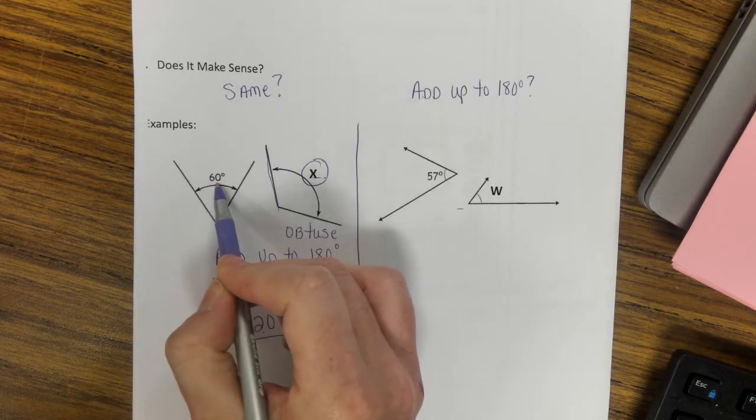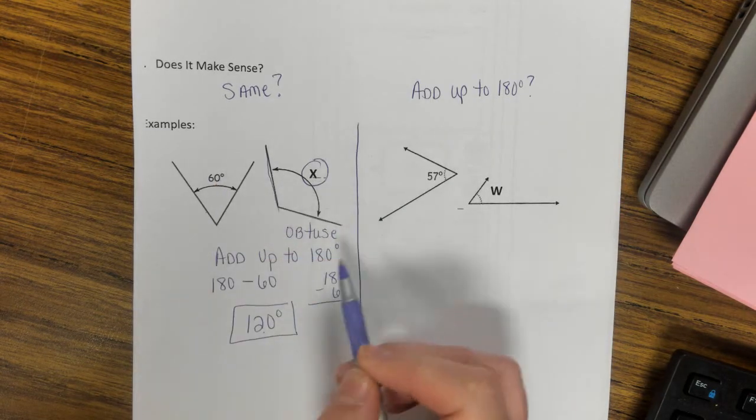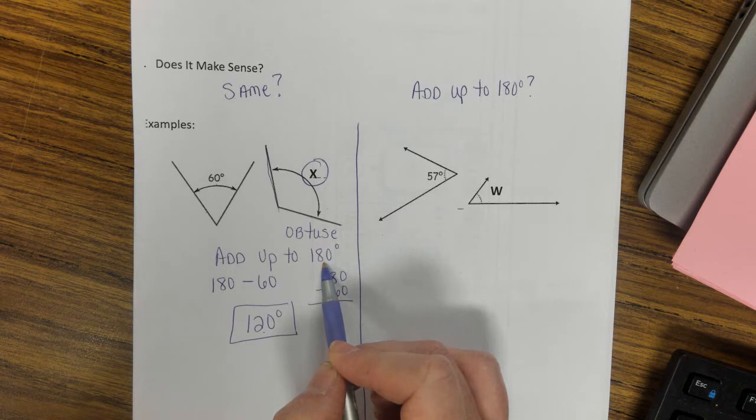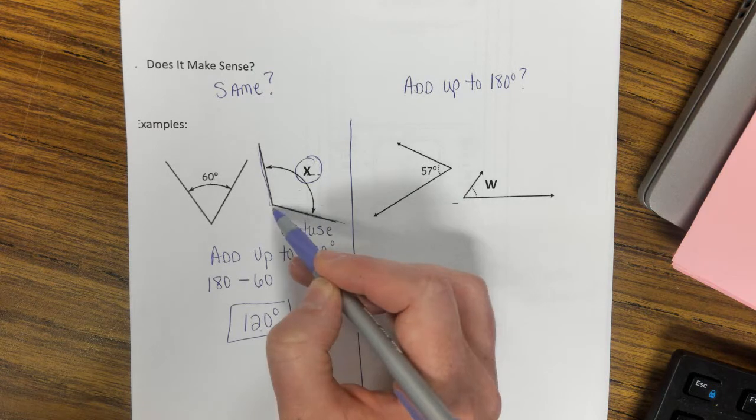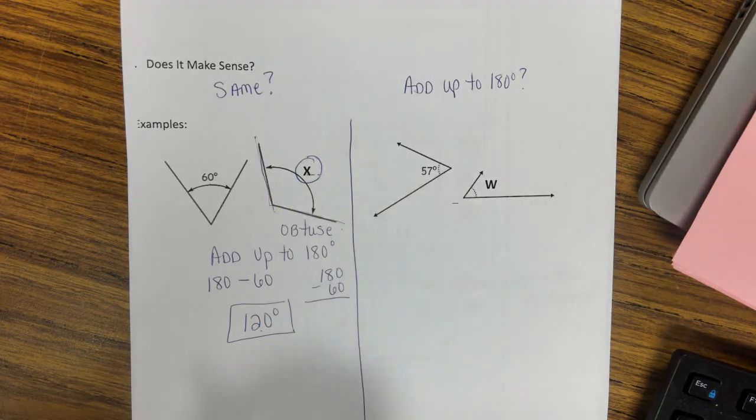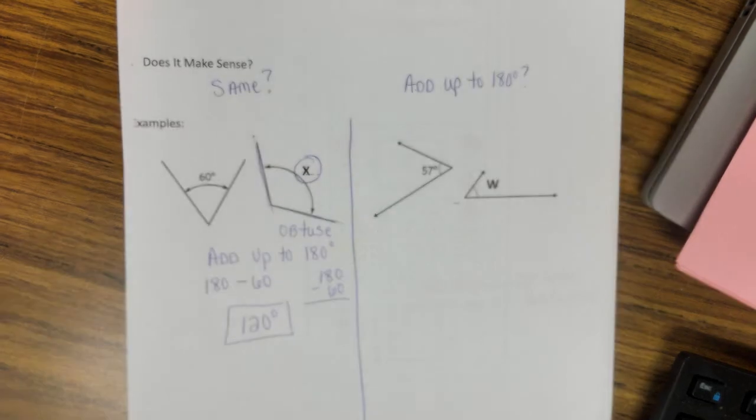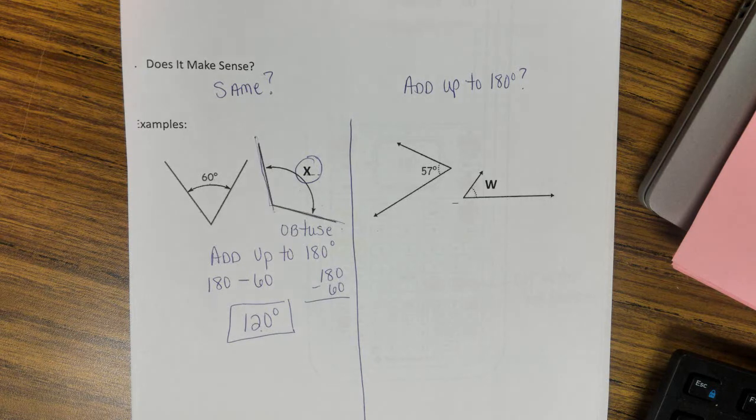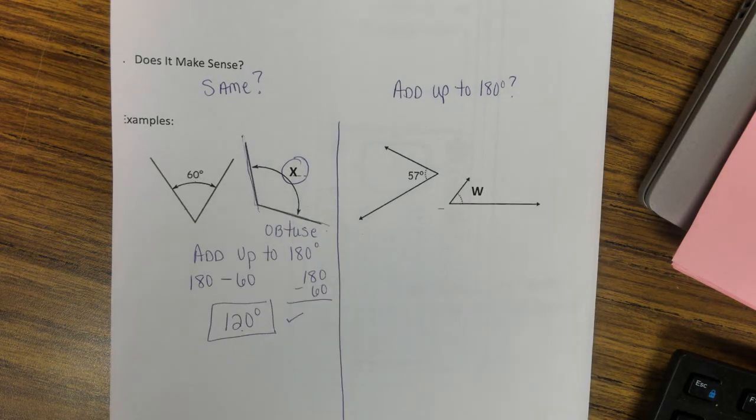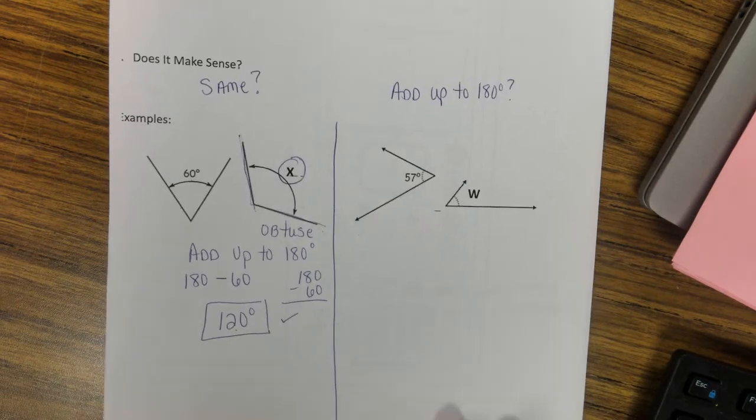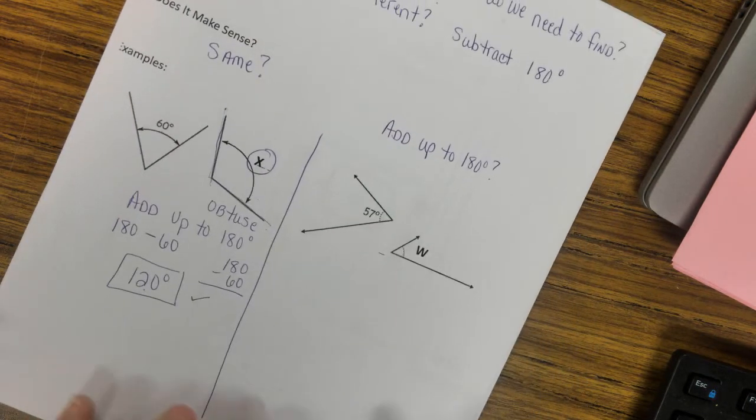Now let's think about that. Does that make sense? Is 120 plus 60 equal to 180? Yes it is. Is 120 an example of an obtuse angle? Absolutely. Remember obtuse is between 90 and 180 degrees. So this works. Our missing angle is 120 degrees.